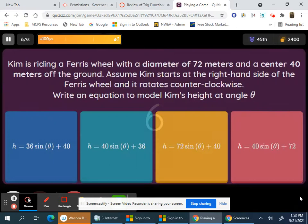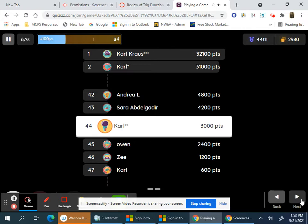Kim's ferris wheel with diameter 72, center 40. Assume Kim starts the right-hand side. So the center is plus 40, and diameter 72, so half of that is 36. So it's 36 sine of theta plus 40.